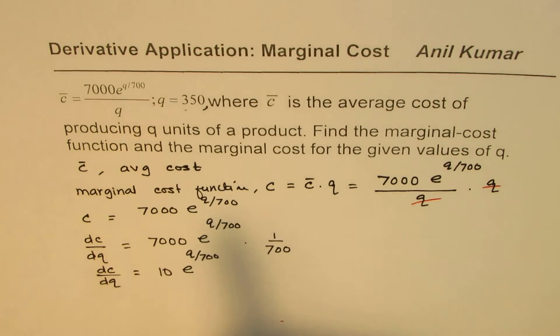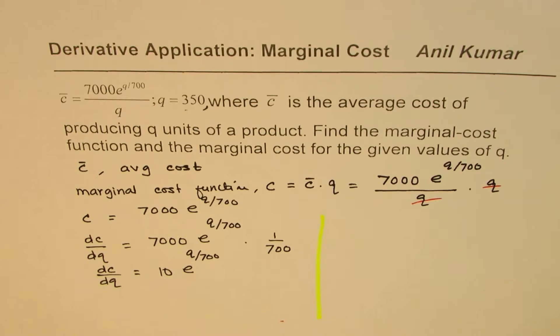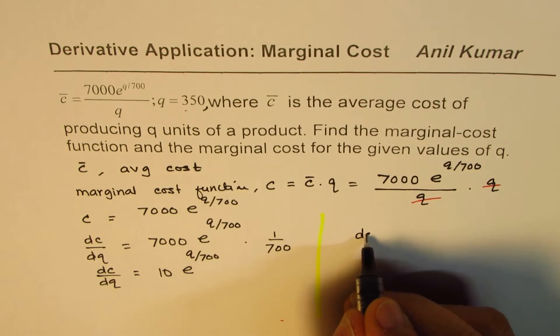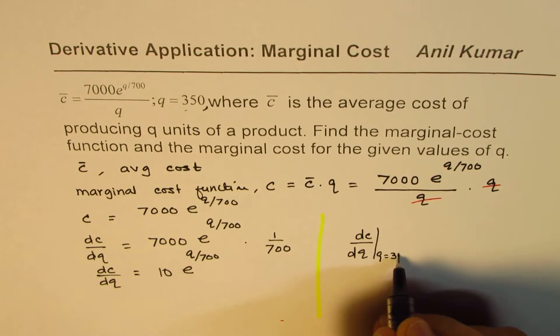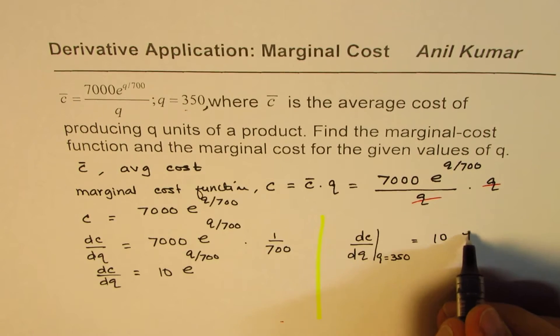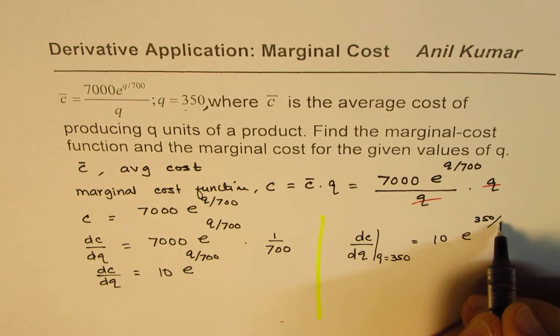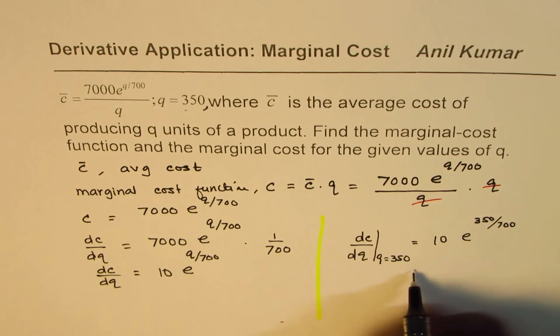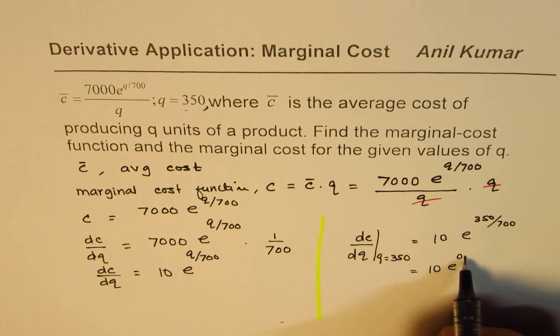For q = 350, we replace q with 350. The marginal cost will be 10e^(350/700), which equals 10e^0.5.